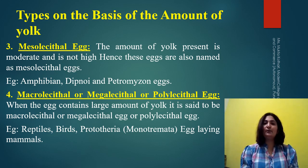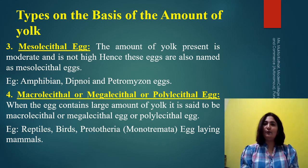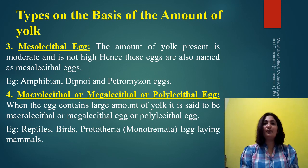The fourth type is the macro, which is also known as mega or polylecithal type of eggs. Here 'macro' means large, 'mega' means large, and 'poly' is also large, and 'lecithal' of course means yolk. So if the amount of yolk present inside the egg cell is large, those type of eggs will be known as megalecithal, macrolecithal, or polylecithal type of eggs.